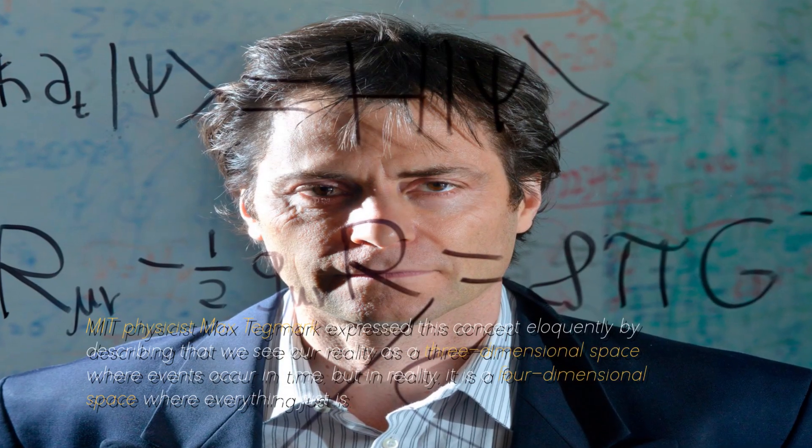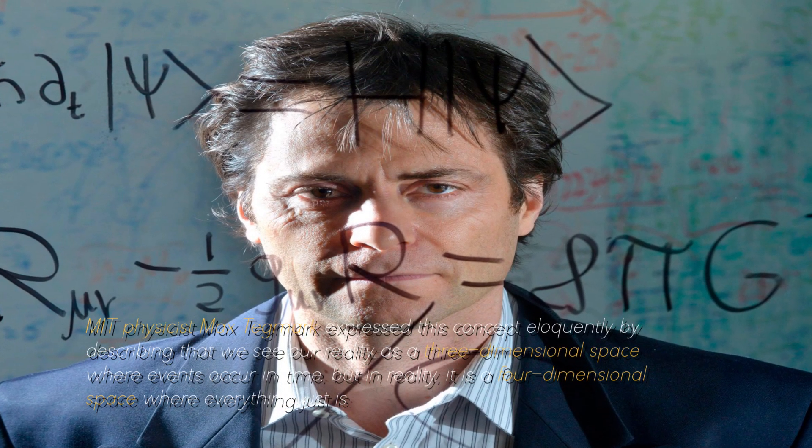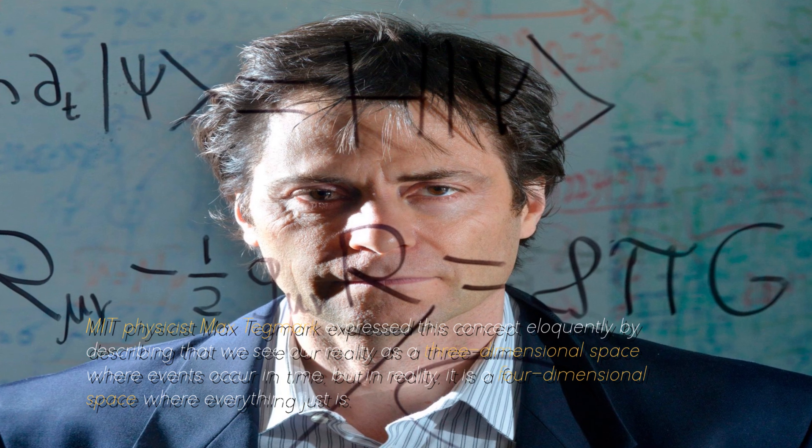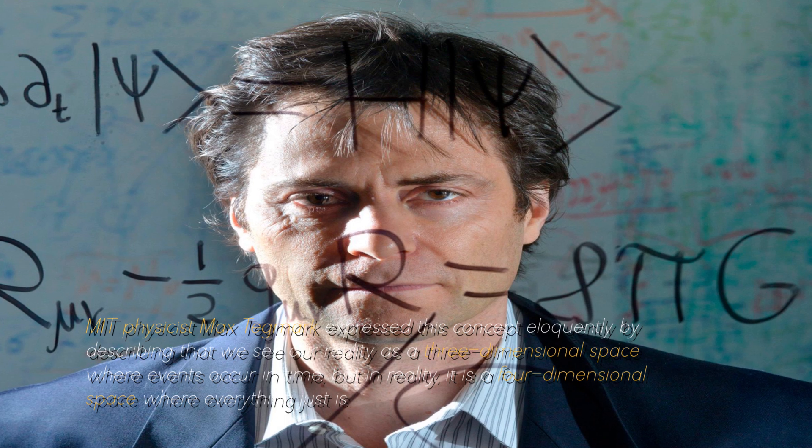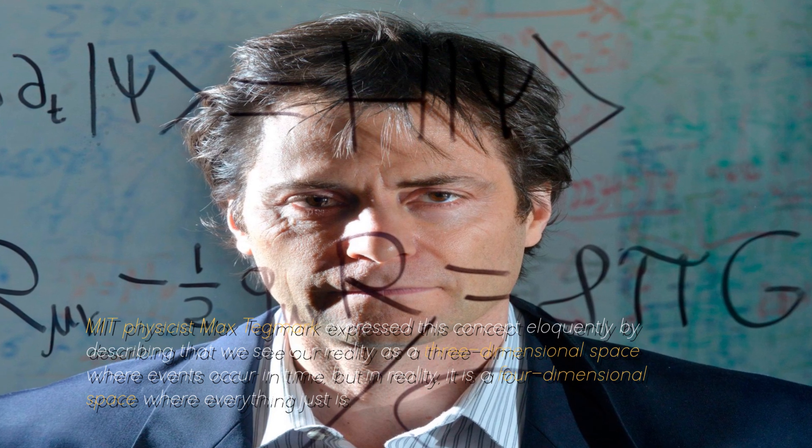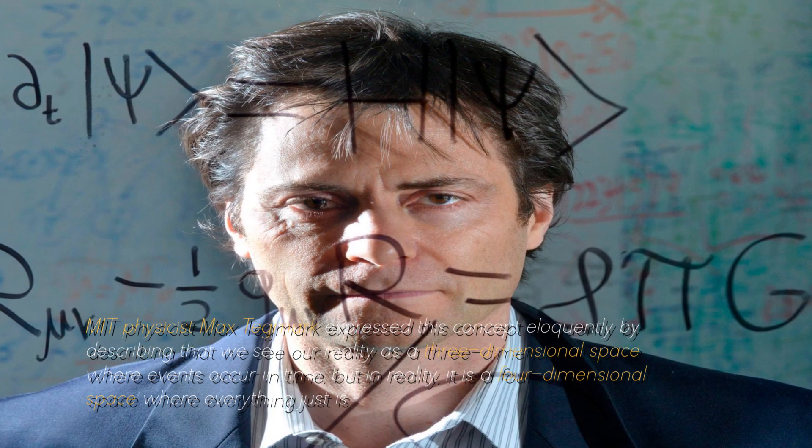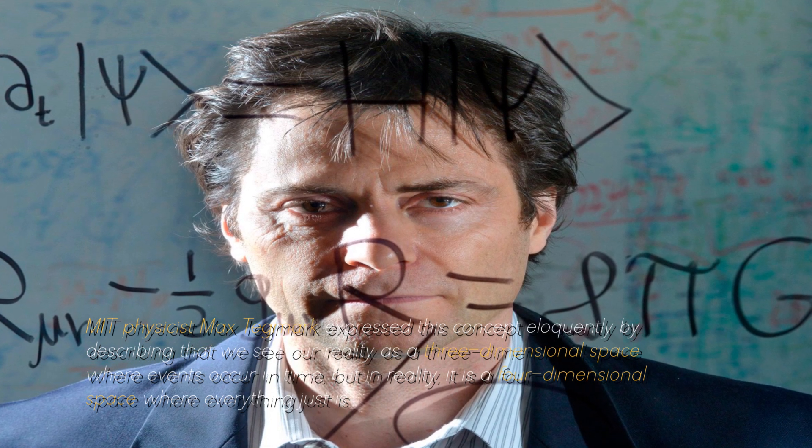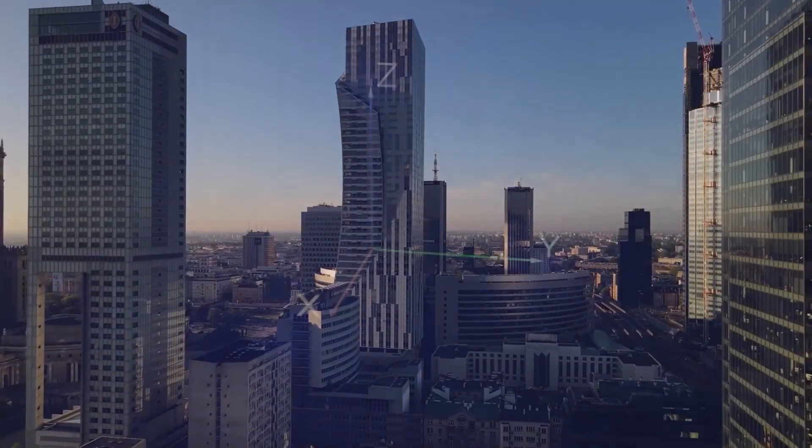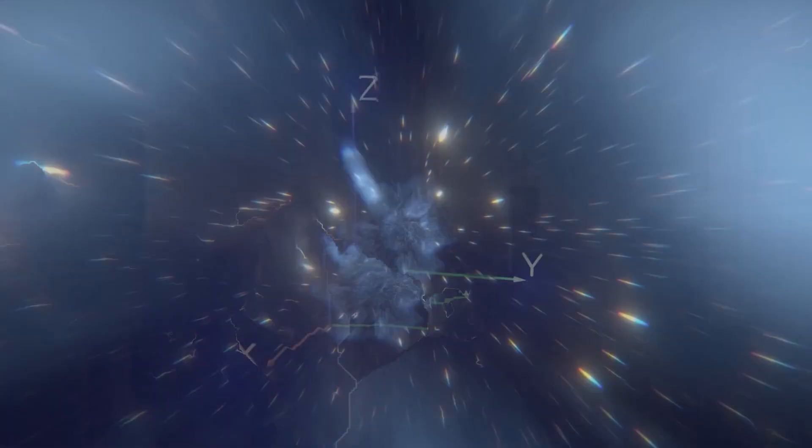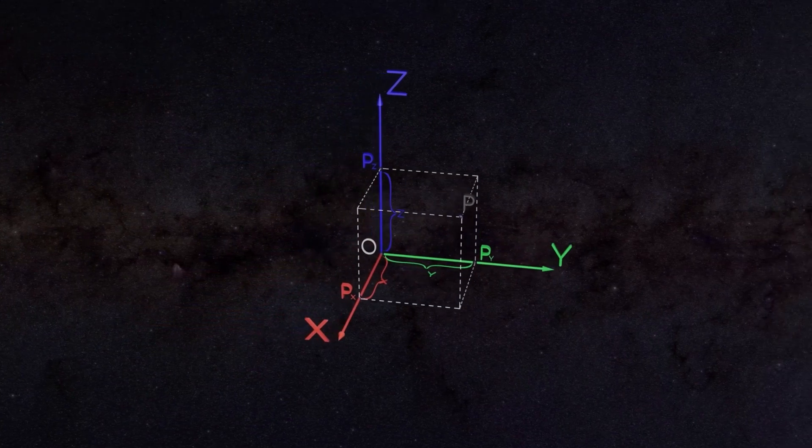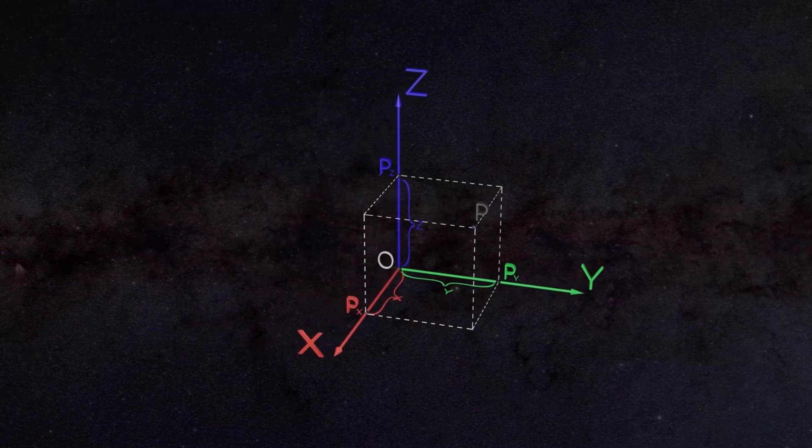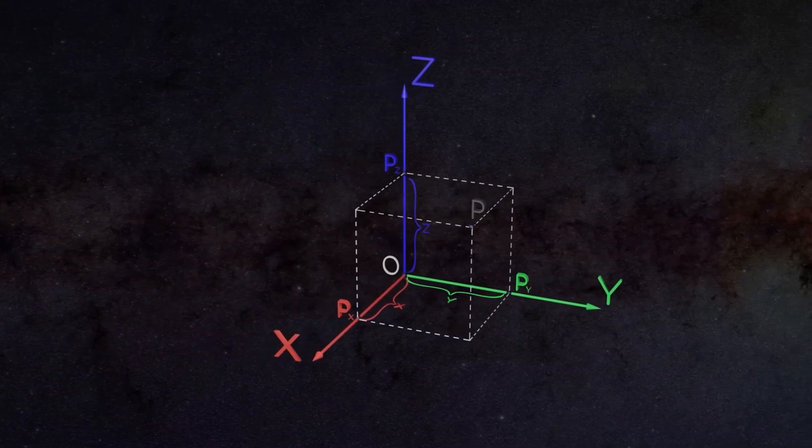MIT physicist Max Tegmark expressed this concept eloquently by describing that we see our reality as a three-dimensional space where events occur in time, but in reality it is a four-dimensional space where everything just is. If this approach were true, then time would be revealed as an illusion, since nothing would undergo real change. Past, present, and future would coexist constantly.